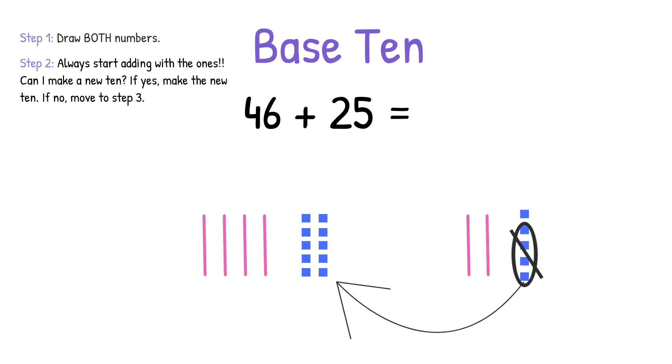Next, I'm going to cross them out over here because they're not here anymore, and I'm going to make a rectangle around my new 10. Step 3 is count all the 1s and 10s to find your answer. So now we have seven 10s altogether, including the new 10 we just made, and we have one 1 left. So our answer is 71.